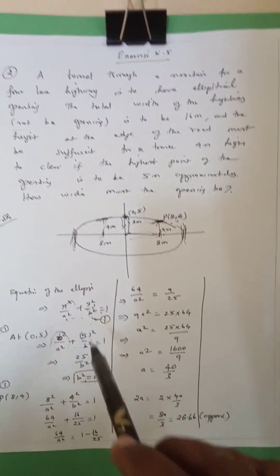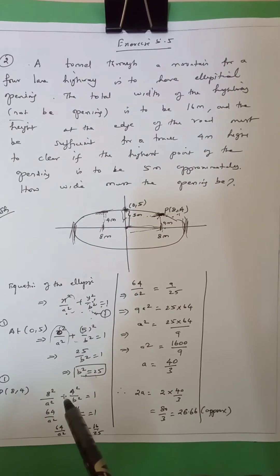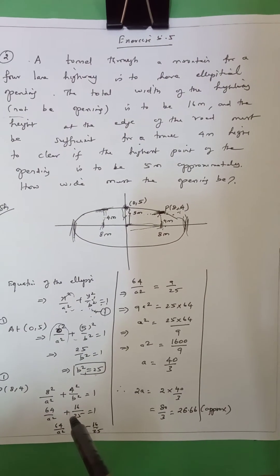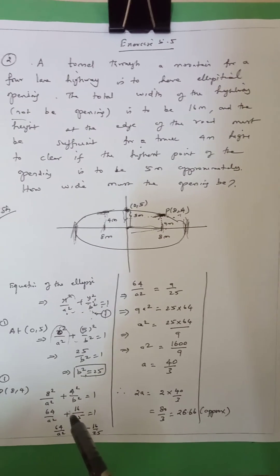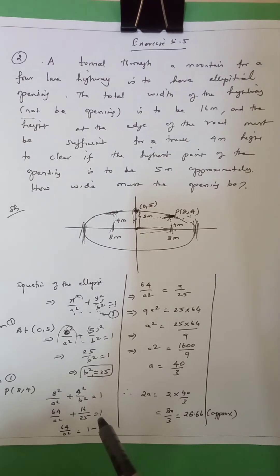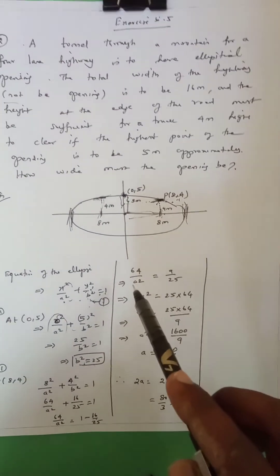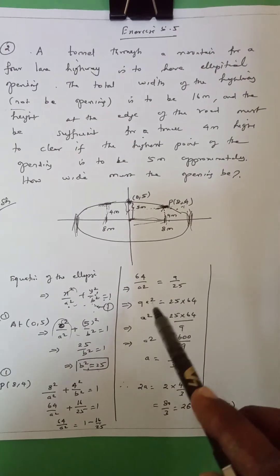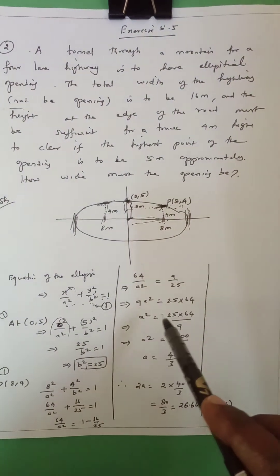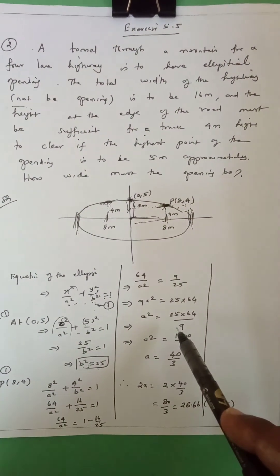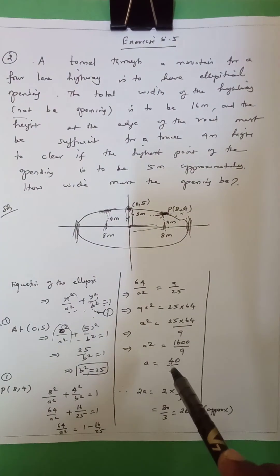With b = 5 and the truck height at x = 8 (edge of road), substituting into the ellipse equation: a² plus 16 over 25 equals 1, so 64 over a² equals 1 minus 16 over 25, giving 64 over a² equals 9 over 25. Cross-multiplying: 9a² equals 25 × 64, so a² equals 25 × 64 over 9, and a equals 40 over 3.